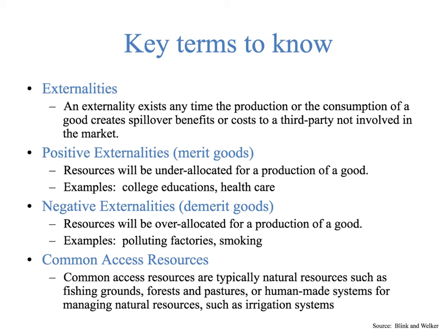Negative externalities are called demerit goods, and these resources will be over-allocated for the production of a good. Examples of that are polluting factories and smoking. And common access resources are typically natural resources such as fishing grounds, forests, and pastures, or human-made systems for managing natural resources such as irrigation systems — things that we all have access to. We'll talk more about these in future videos.